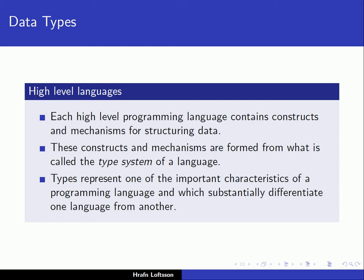We will define a little bit later what we mean exactly by the type system. Notice that types represent one of the important characteristics of a programming language, and different programming languages have different type systems — that's what makes programming languages unique. Even though programming languages may fall into the same high-level category, like object-oriented languages, C++ and Java are both object-oriented but they still have their own type systems which differ from each other.